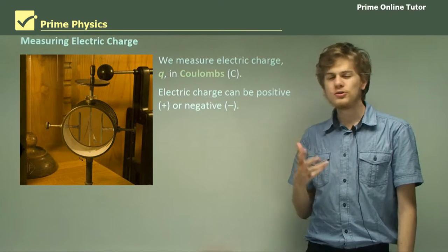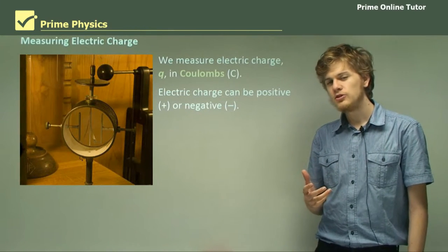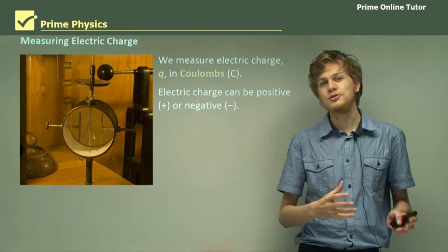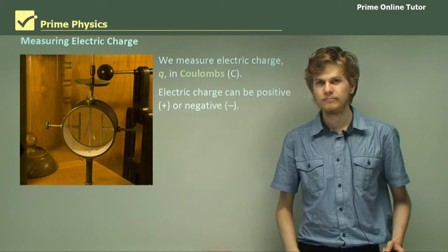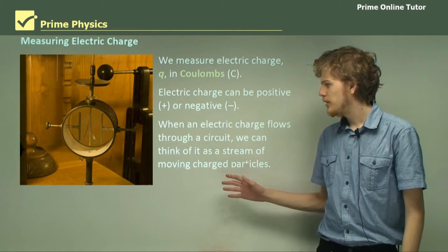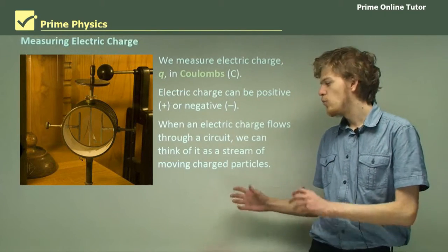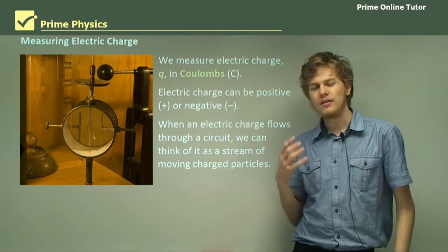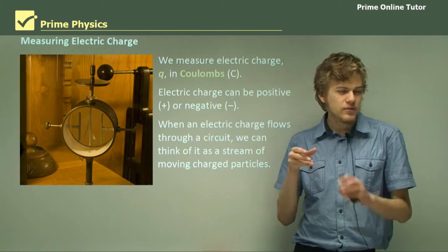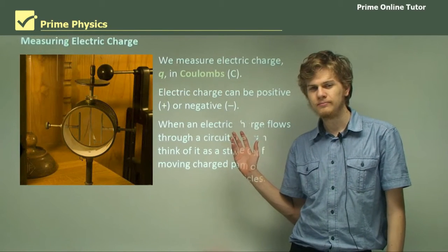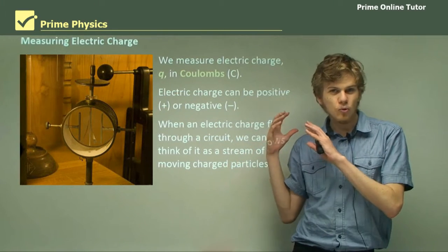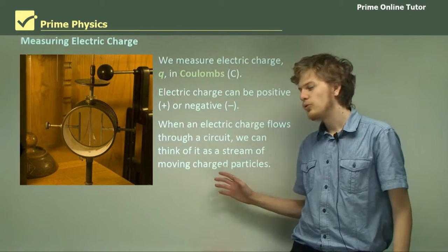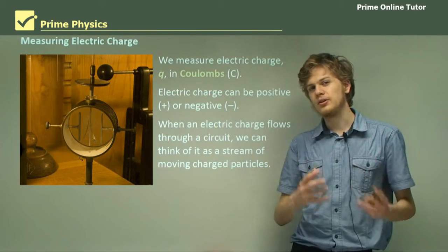Electric charge can either be positive or negative. So we can have an object with an electric charge of positive one coulomb, or an electric charge of negative one coulomb. When an electric charge passes through a circuit, we can think of it as a stream of tiny little particles that are moving. Each of these little particles has an electric charge. When all these millions and millions of tiny particles are moving through a wire, that's what creates the electric current in a circuit.